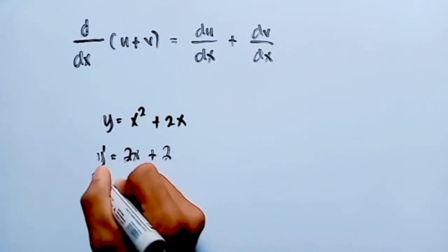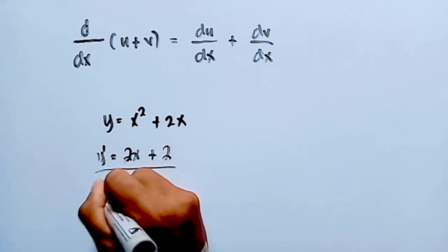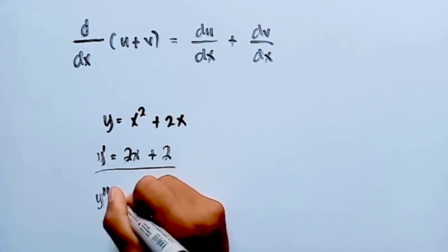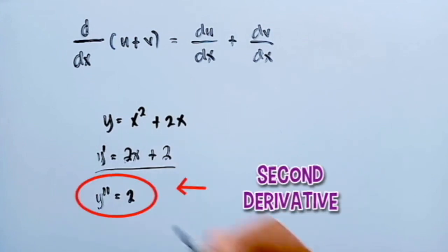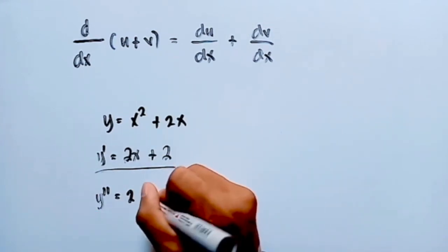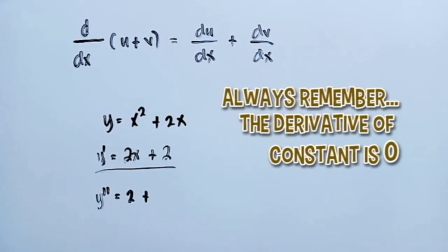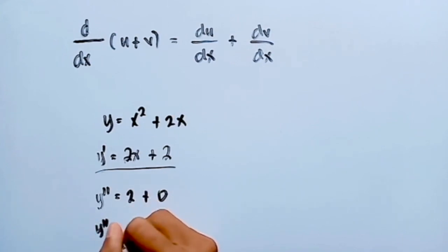So this is the first derivative. If we're going to get the second derivative of the function y equal to x squared plus 2x, y double prime is equal to — what is the derivative of 2x? The derivative of 2x is 2. Plus, what is the derivative of the constant 2? The derivative of a constant is 0. So 2 plus 0 is still 2. So the second derivative is 2.